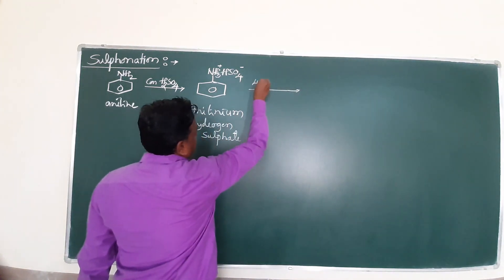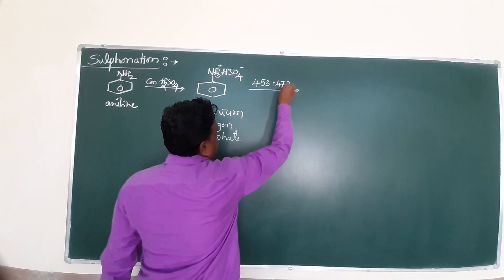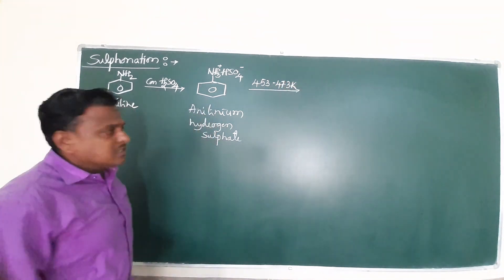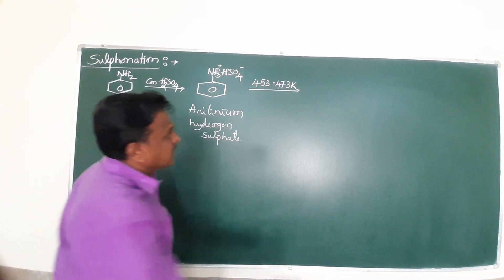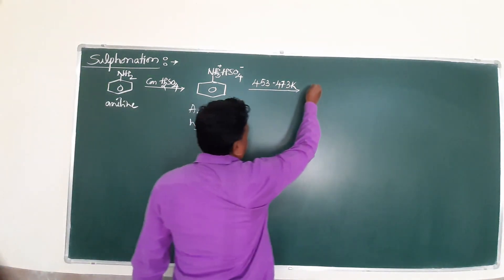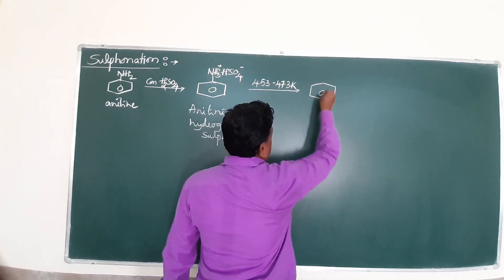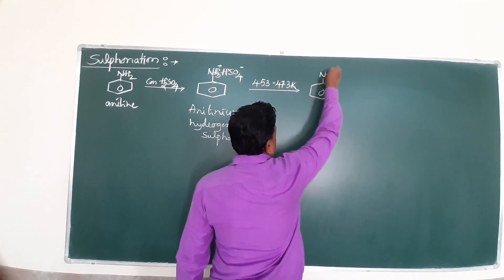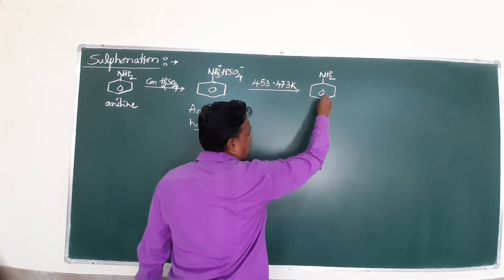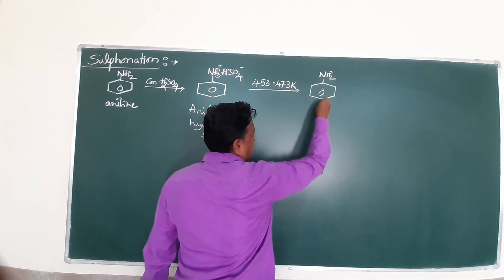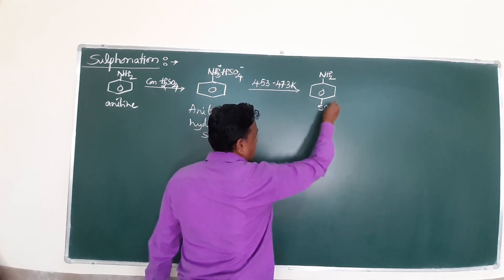When heated at 453 to 473 Kelvin, yes, the proton will be released. Automatically, the NH₂ group is reformed. Here the hydrogen is released — keep this in mind. This H comes out as SO₃H.